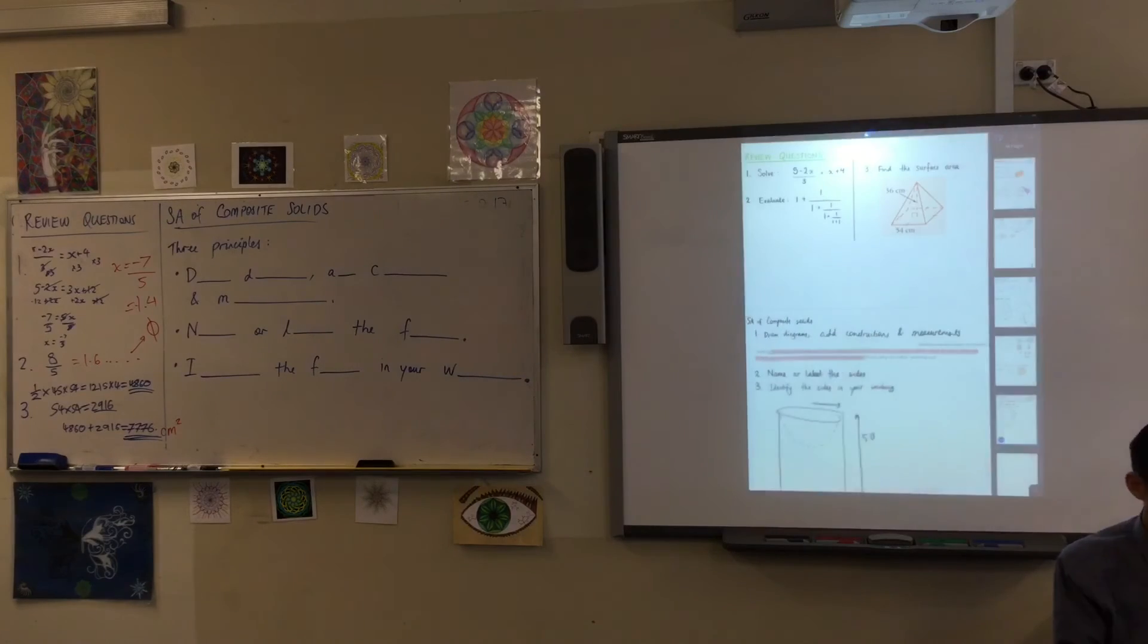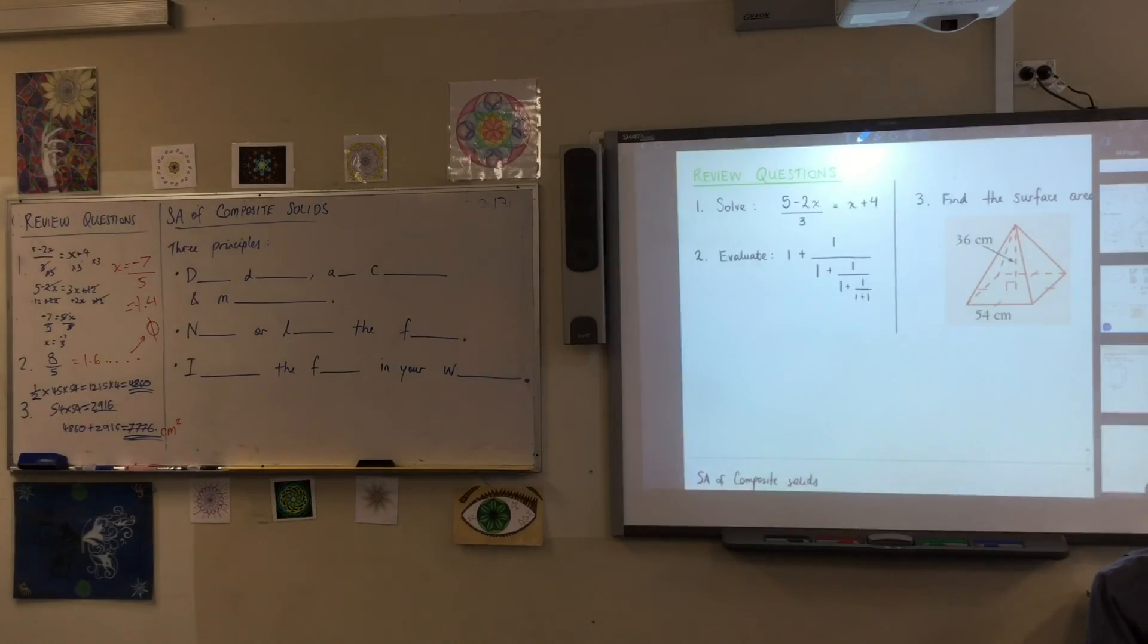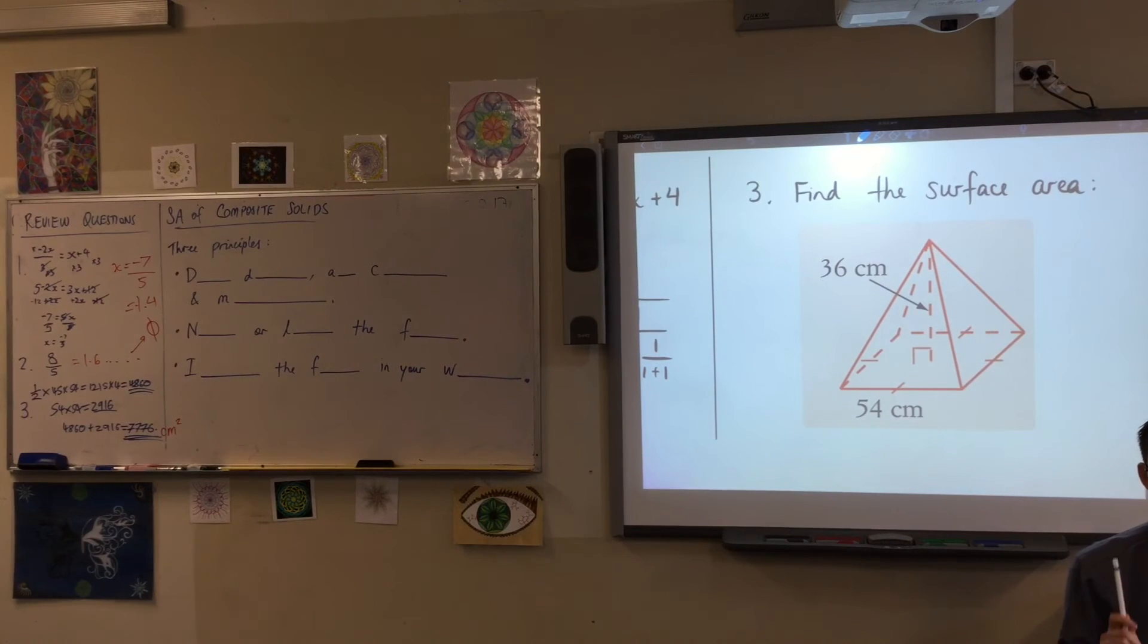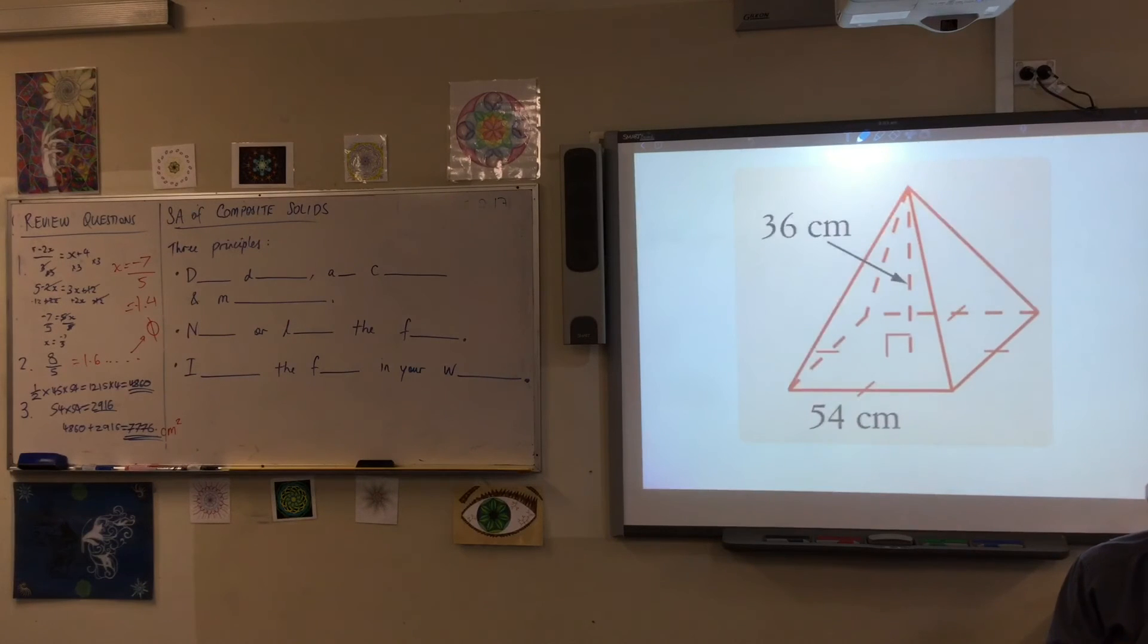So where would you put some constructions on to here? Can anyone suggest where they might put the first additional line? Right, yeah, good. So you can see this length along here is 54, but for it to be useful to us, you need to divide it by 2, which gives you 27. Why is that useful?